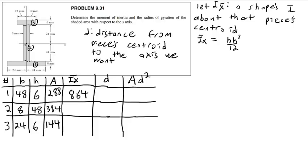When you initially got the I_x-bar, you went to the table to find this formula? We actually derived this one in class, but you can also find this formula from a table. For piece two: 48 cubed times 8 divided by 12 equals 73,728, in millimeters to the fourth power.